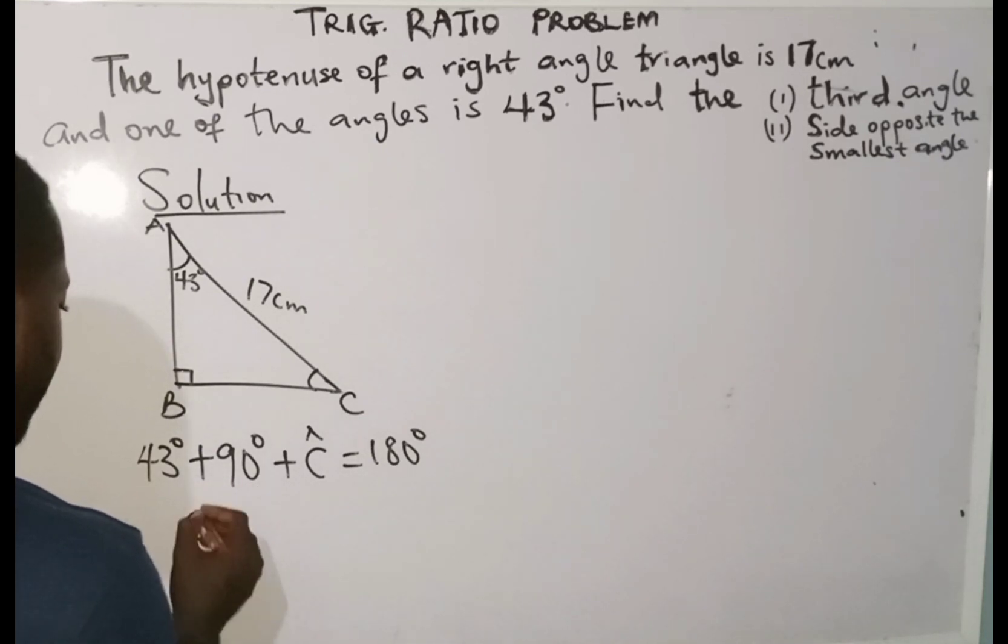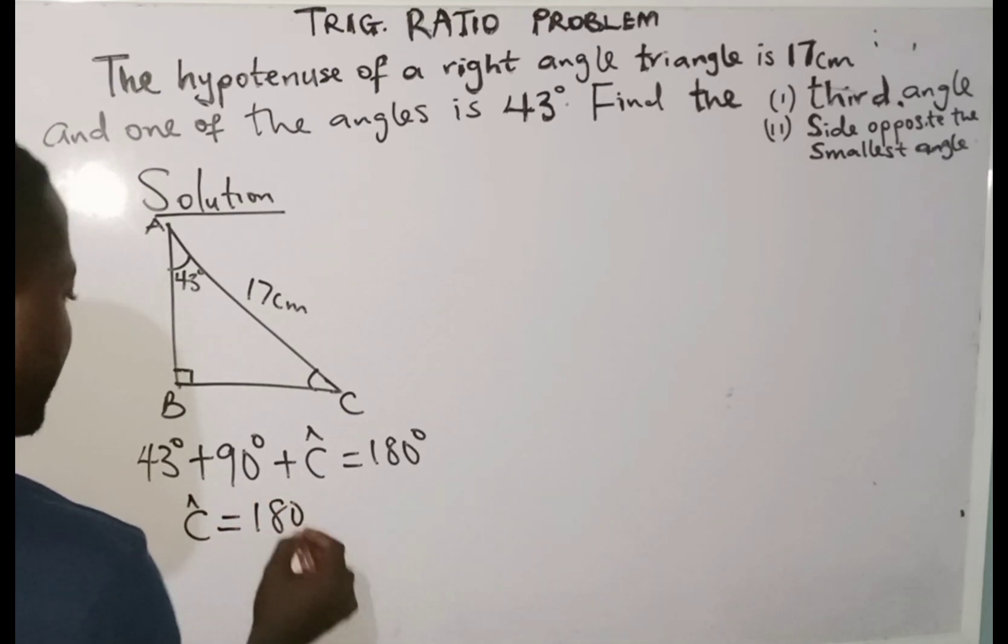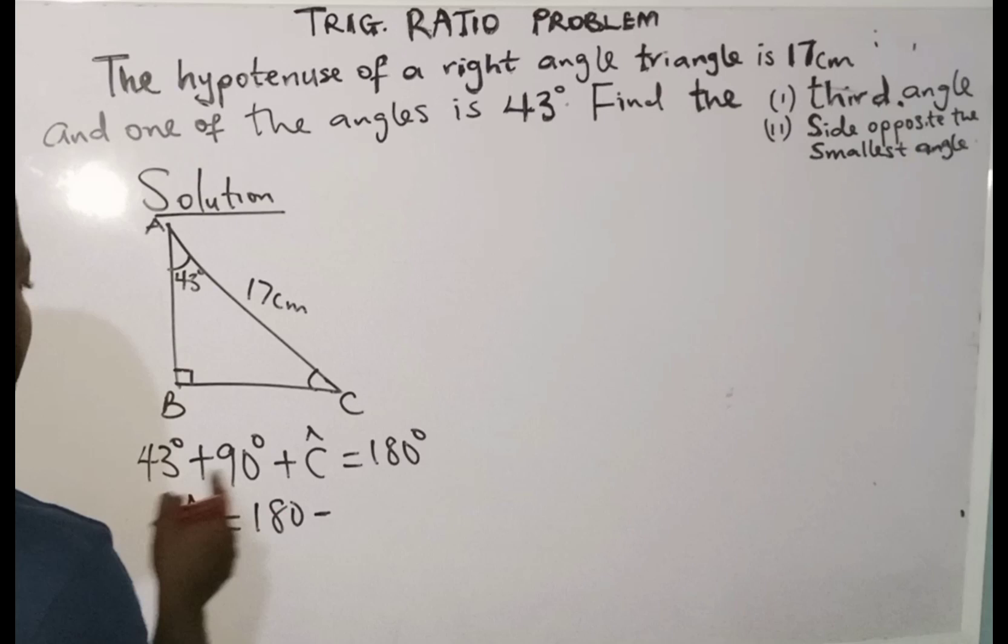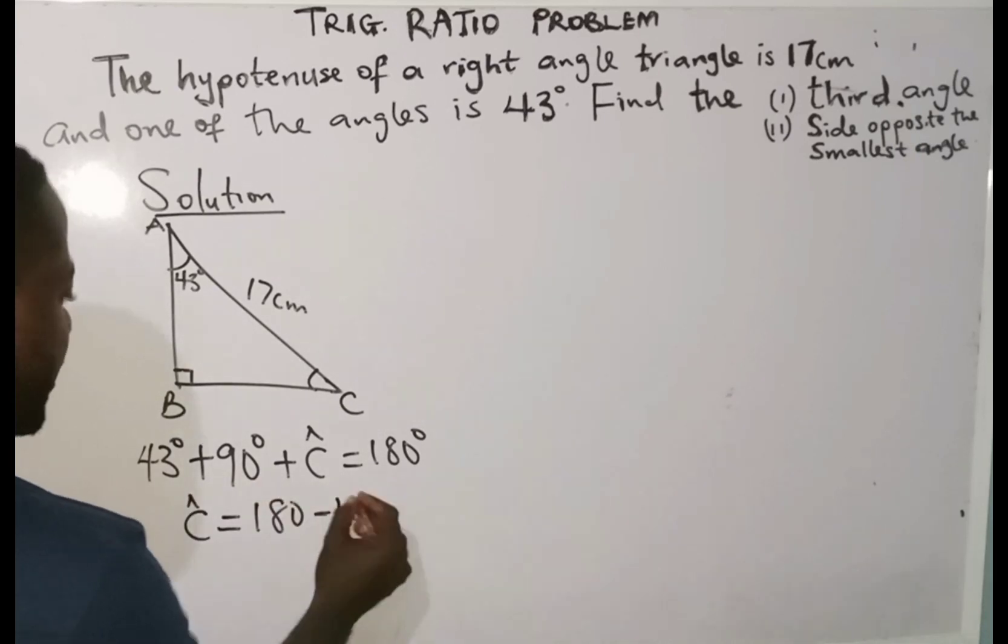In that case, if I rearrange, I'm going to have 180 degrees minus 133 degrees. The 133, we now move to this side and becomes minus 133.